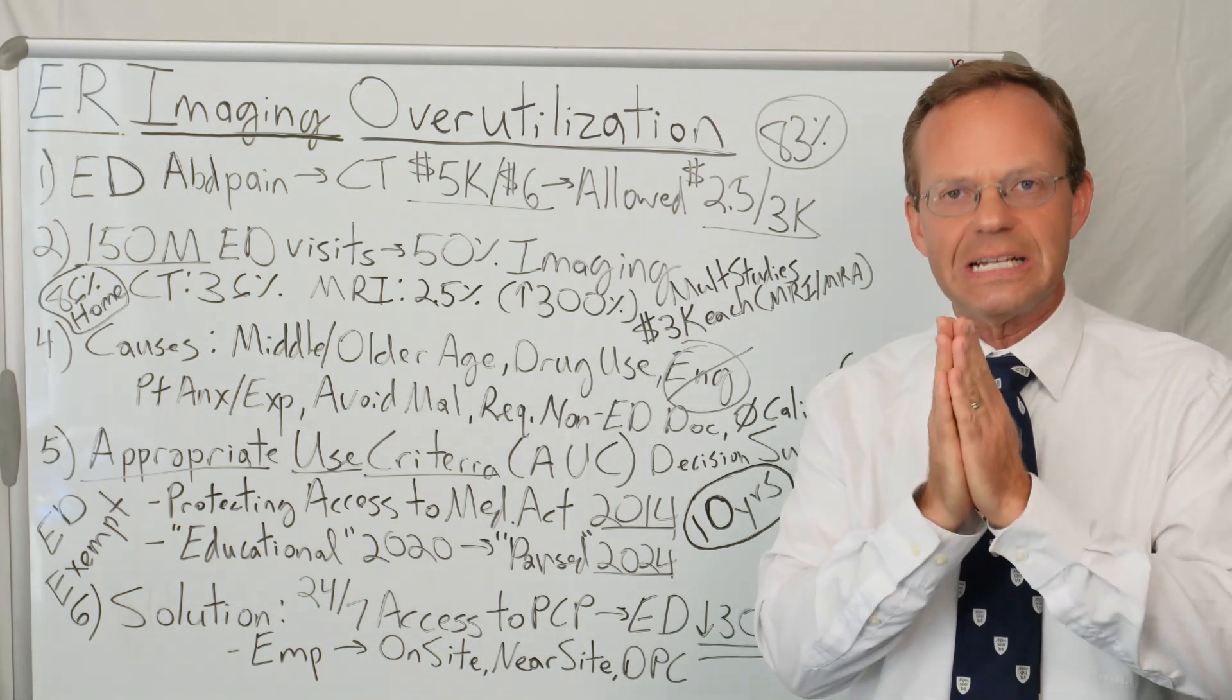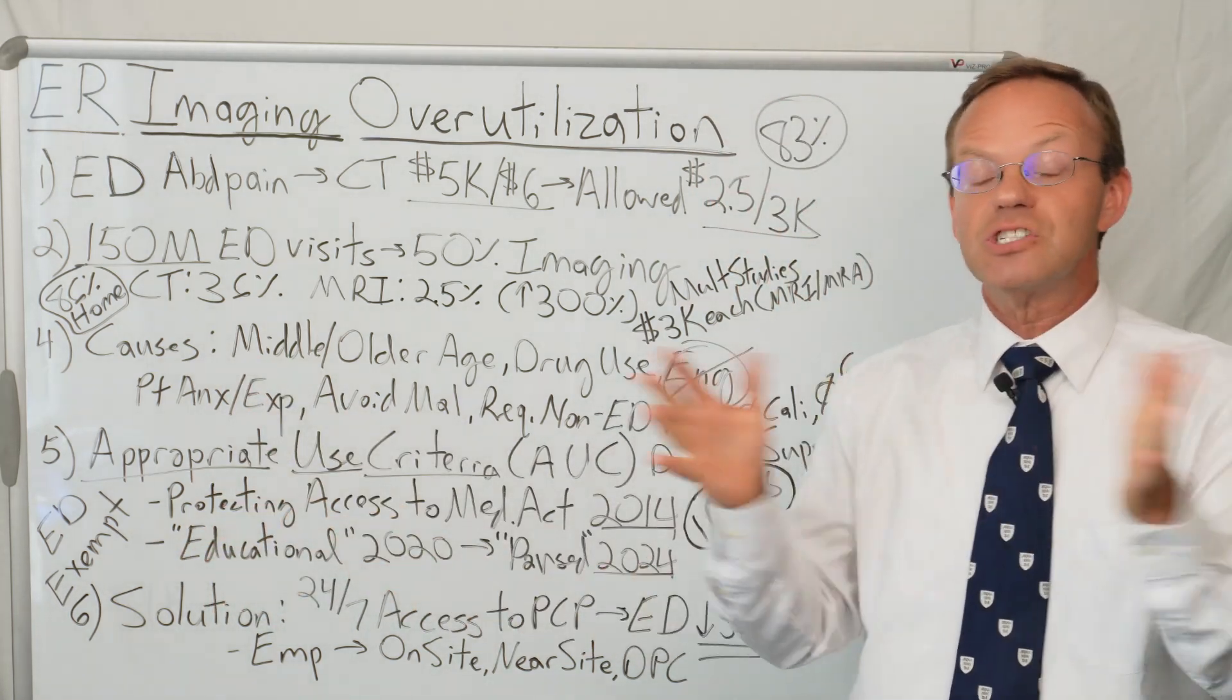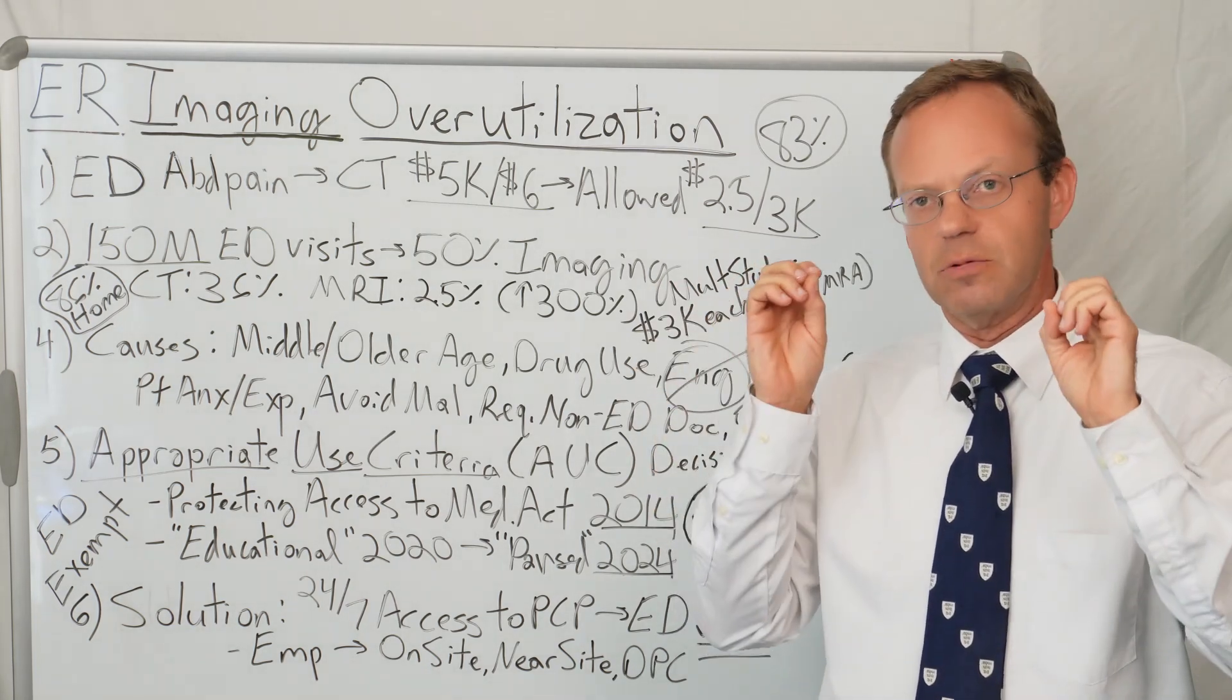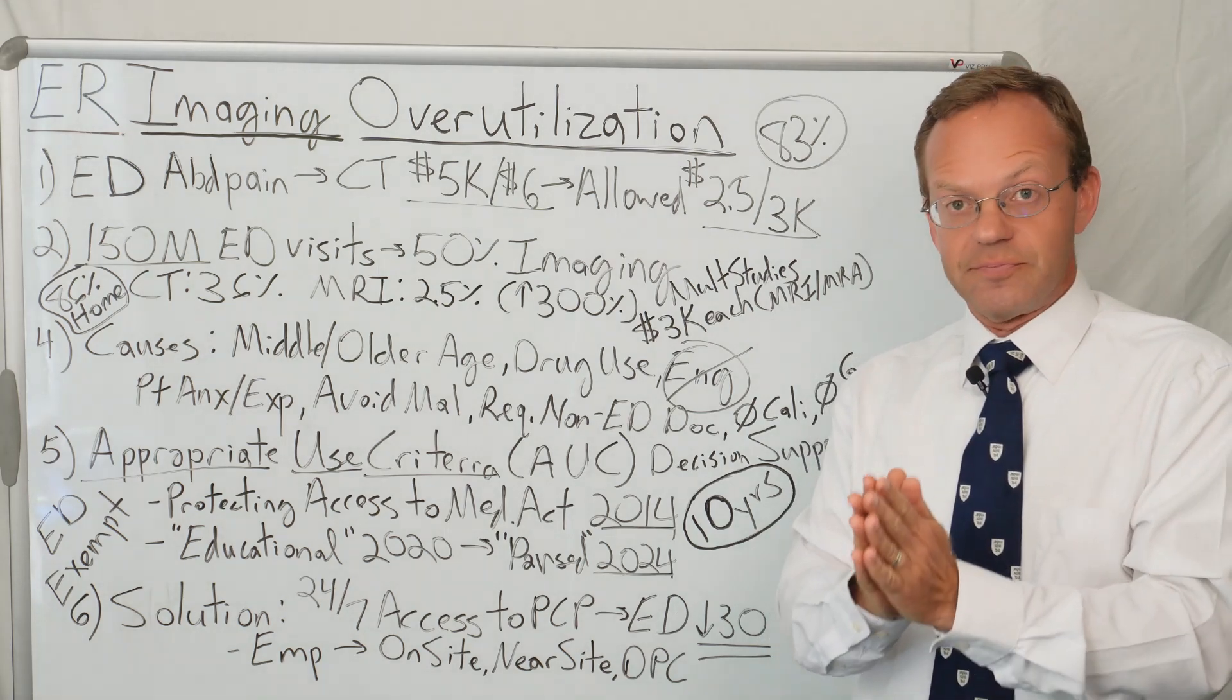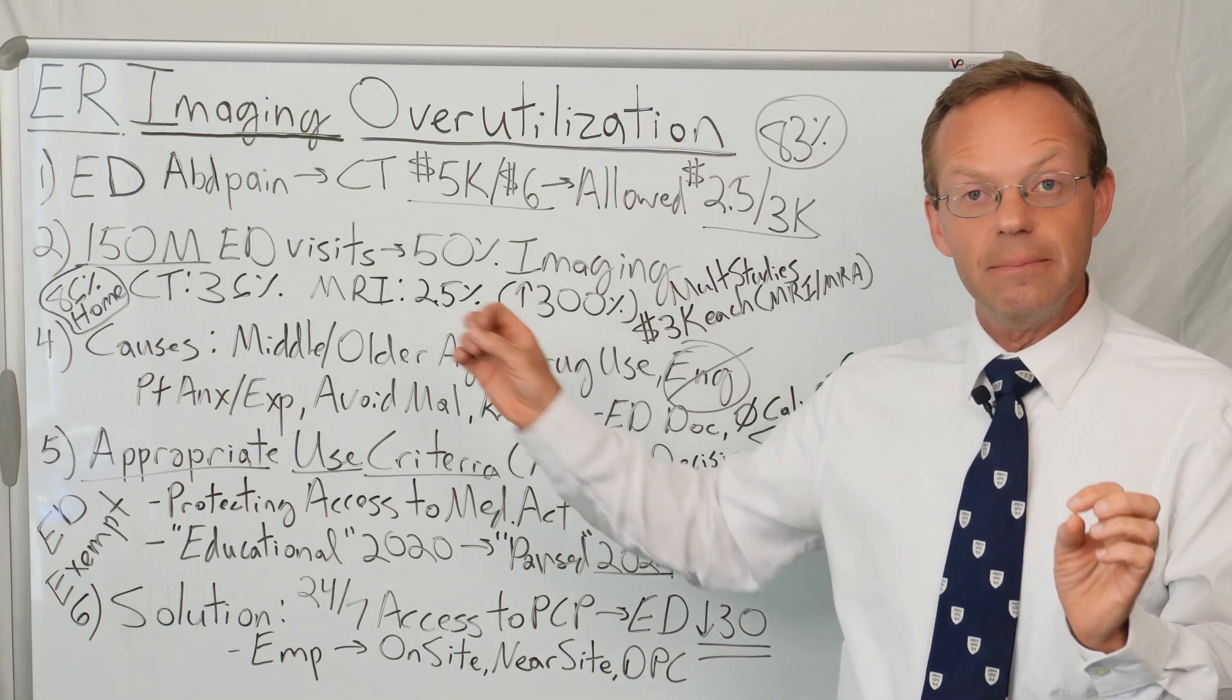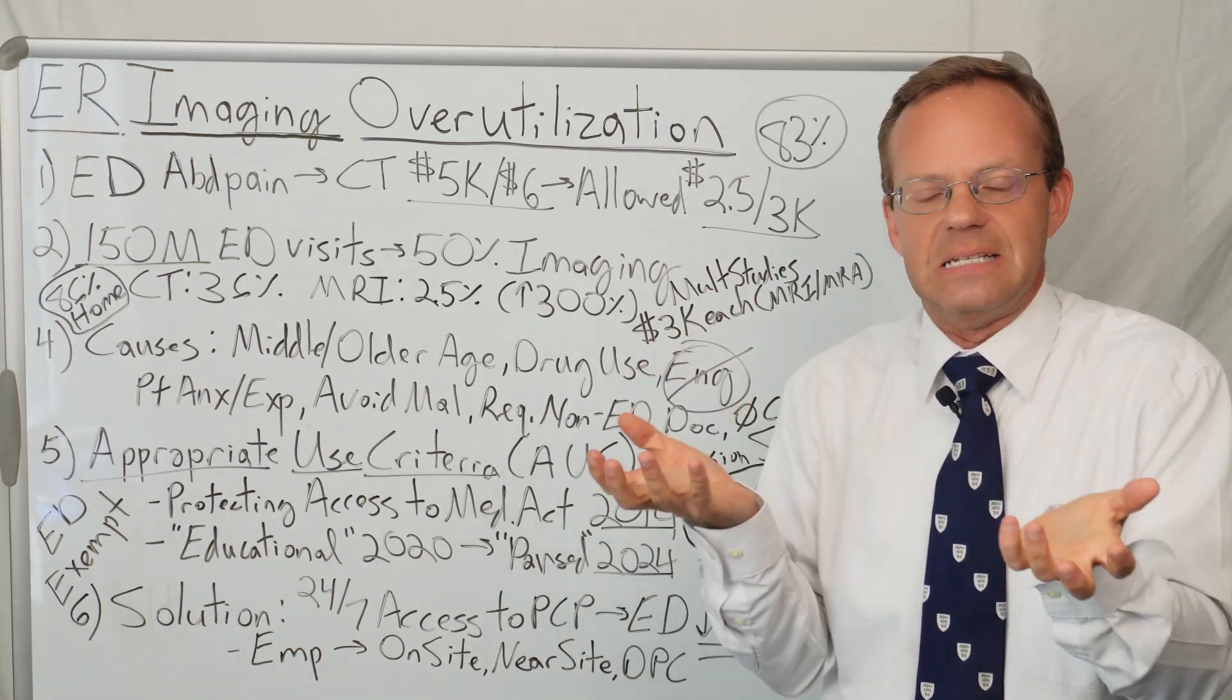There was a huge exemption in appropriate use criteria, and that huge exemption was the emergency department, meaning that the emergency department could order any imaging they wanted to and it was at the discretion of the doctor. There was no decision support, there was no rules, there was no financial penalty. So here you have a situation where you have 24-7 access to advanced imaging where all these prior authorization, utilization controls, appropriate use criteria, it doesn't apply.